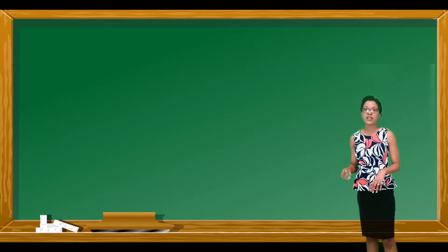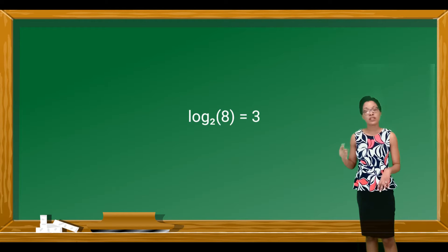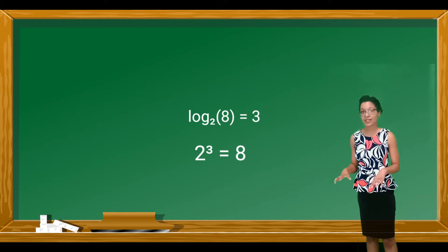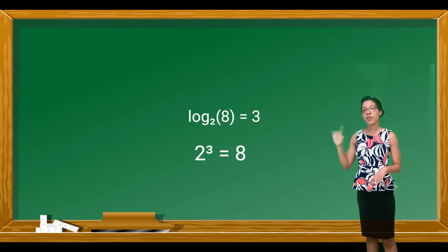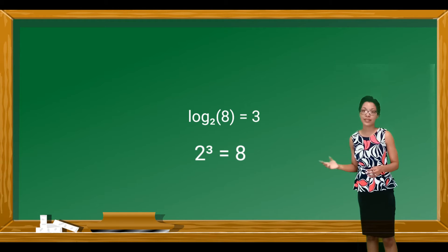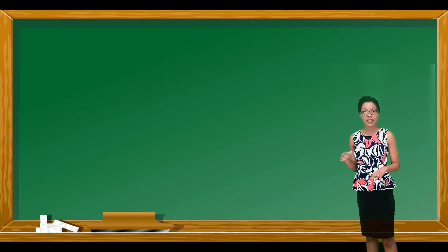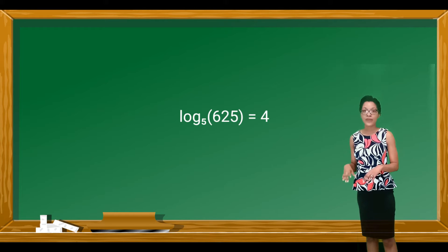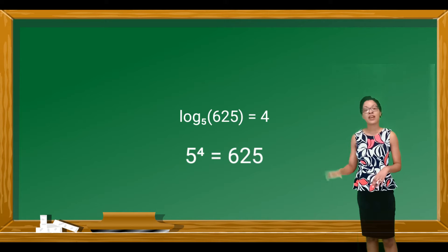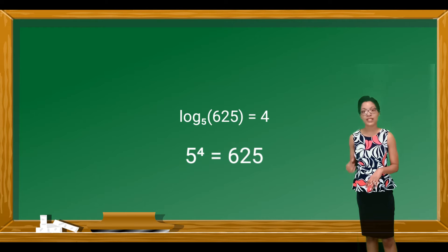Logarithm is another way of writing indices. For example, log base 2 of 8 is equal to 3, so we can rewrite that as 2 to the power of 3, 2 cubed is equal to 8. The next example, log base 5 of 625 is equal to 4, so we can rewrite that as 5 to the power of 4 is equal to 625.